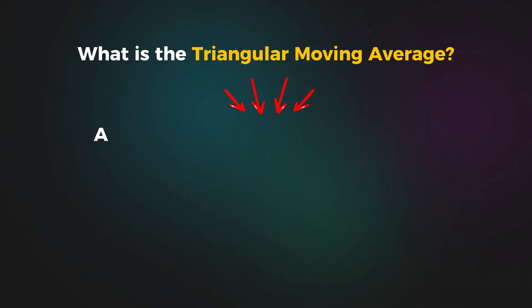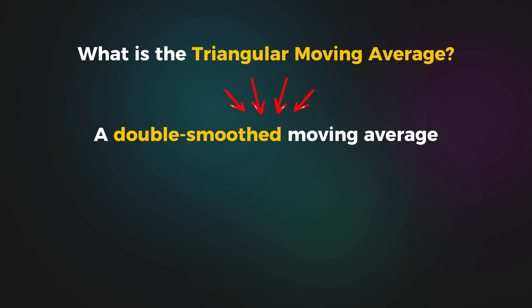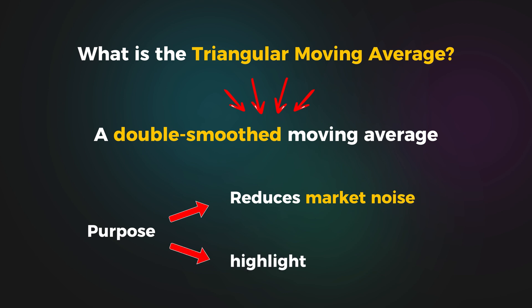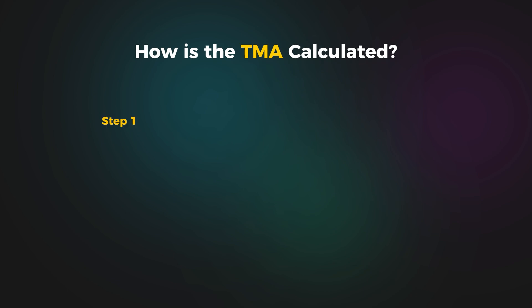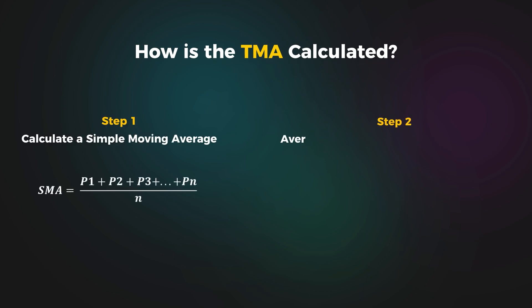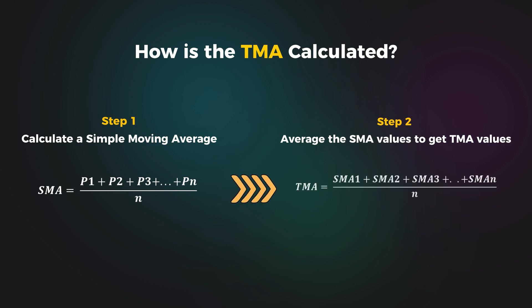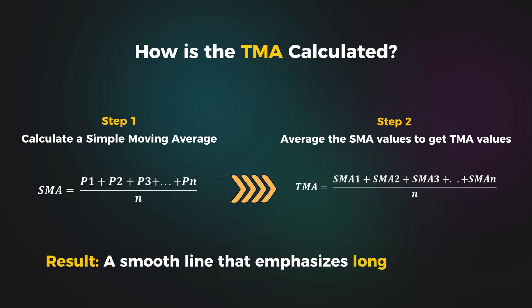The triangular moving average provides a smoother trend line by averaging the averages, making it less sensitive to short-term price fluctuations. This makes it ideal for identifying sustained market trends. The TMA is calculated in two steps: first by averaging prices with a simple moving average, and then smoothing these results with a second average. This process creates a line that is smoother and better suited for long-term analysis.